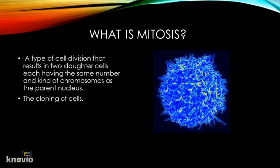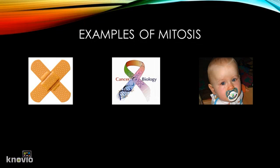Mitosis is very important because it allows organisms to develop and grow. One example is healing — if you get a cut, your body needs new cells, and these cells come from mitosis, or the cloning of cells. Another example is cancer, which is caused by too much mitosis: cells cloning themselves out of control. One more example is growth — in order for a baby to grow, it needs mitosis.